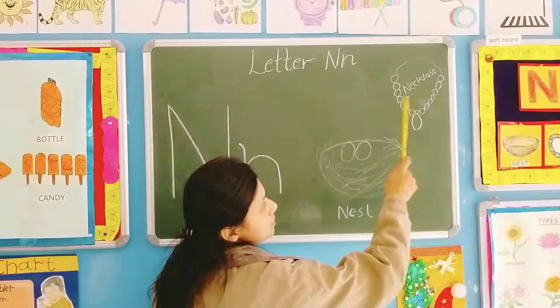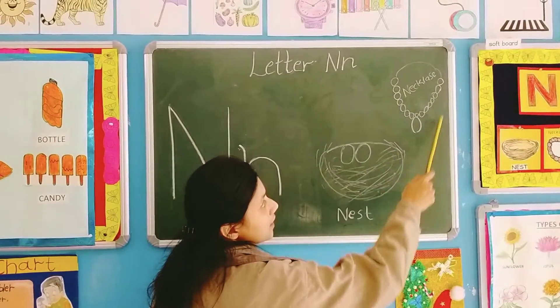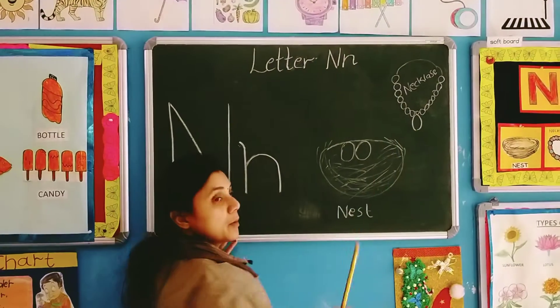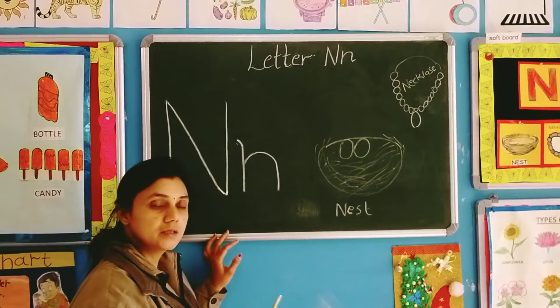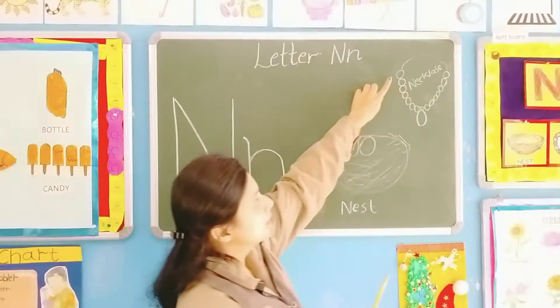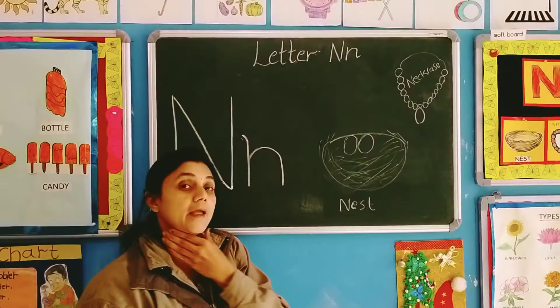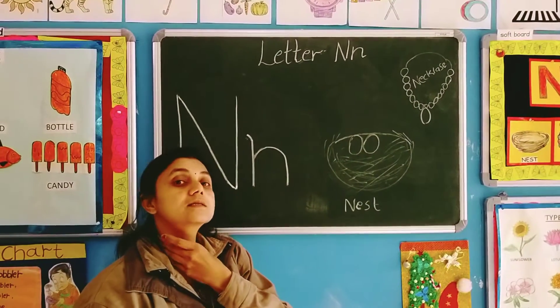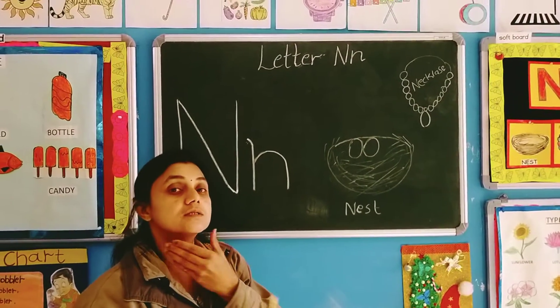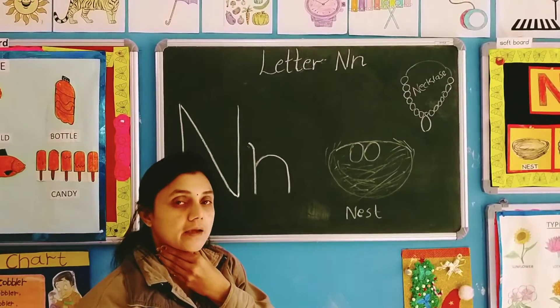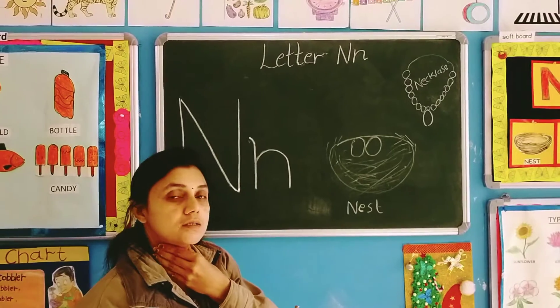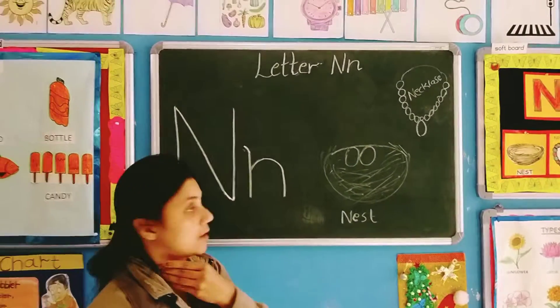Now look, what is this? This is a necklace. Abki mamma jo galembe phehnji hai nahi? That is a necklace. N — you can see this also. What is this? This is a neck. Neck.